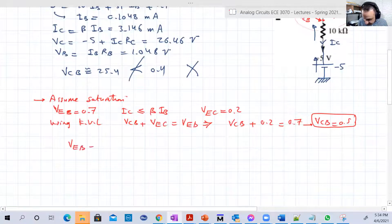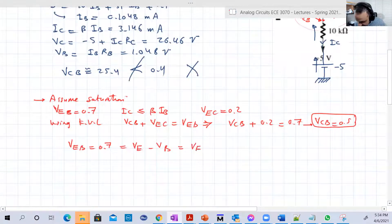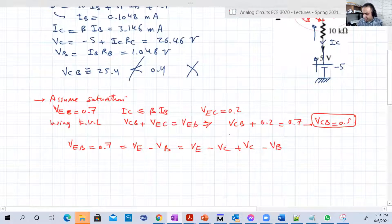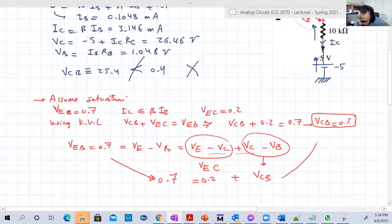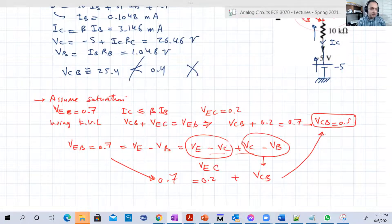So using Kirchhoff, KVL, you can see that VCB plus VEC equal to VEB. So from that, VCB, which is unknown, plus VEC, which is 0.2, equal to VEB, which is 0.7. So from that, VCB equal to 0.5. But now why are we calculating VCB? We're going to use it. We're going to use it in a moment. Is there another way? Maybe you are not convinced that this is Kirchhoff. Of course, it's Kirchhoff.